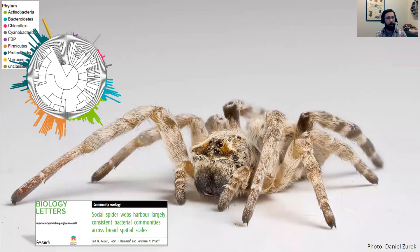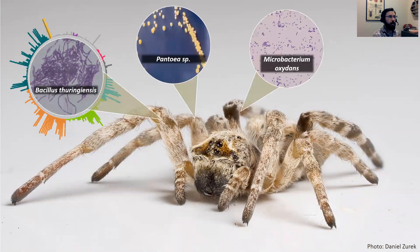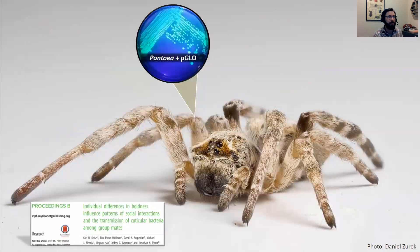To study how microbial transmission occurs within colonies, I've used 16S sequencing approaches to uncover the microbial communities found in their webs and on their cuticles. We also use culture-based methods to collect bacteria in situ for manipulative experiments. We use these naturally occurring bacteria as models of microbial transmission by transforming them with plasmids so they can grow in selective growth media and fluoresce under UV light, allowing us to track the transmission of an introduced strain.